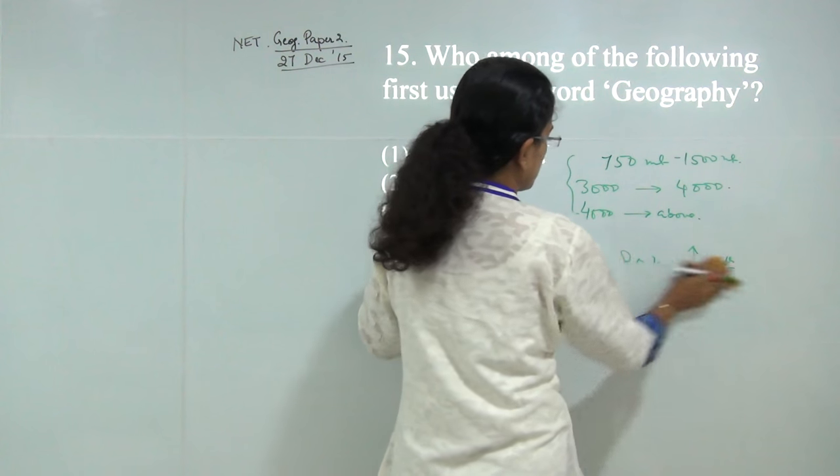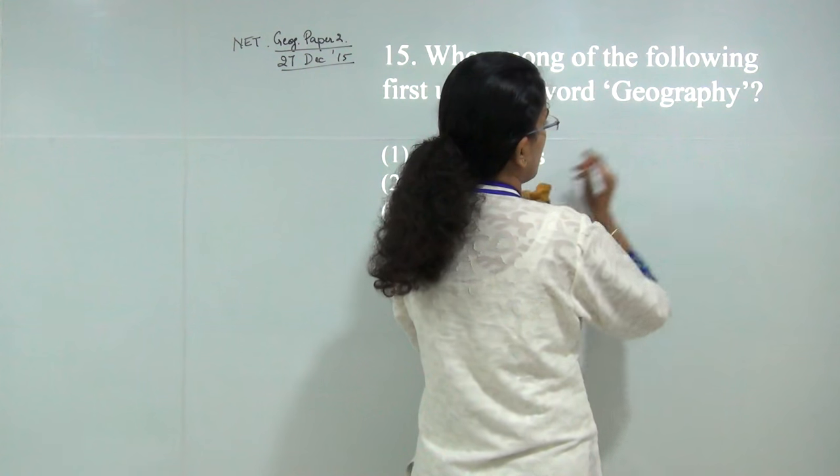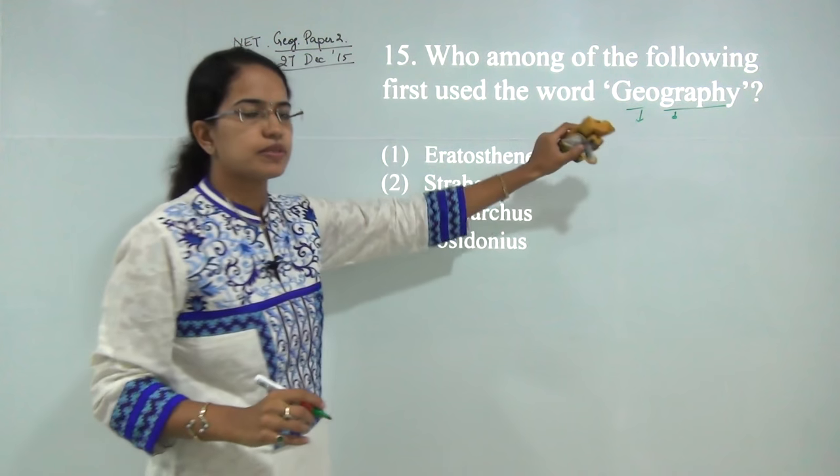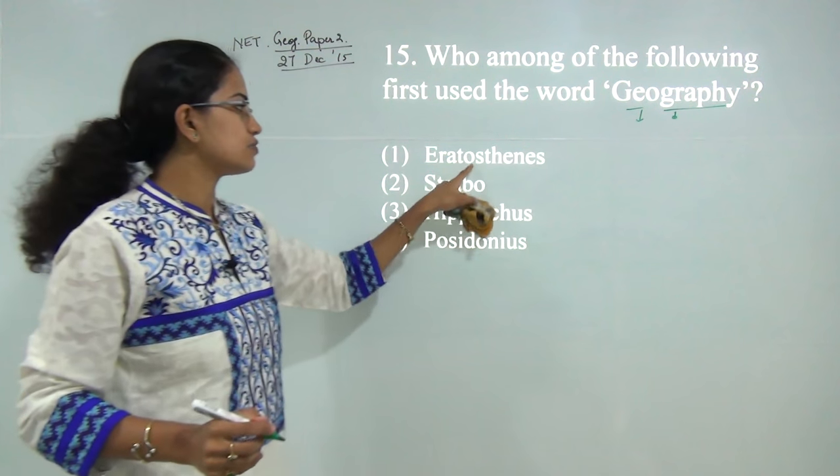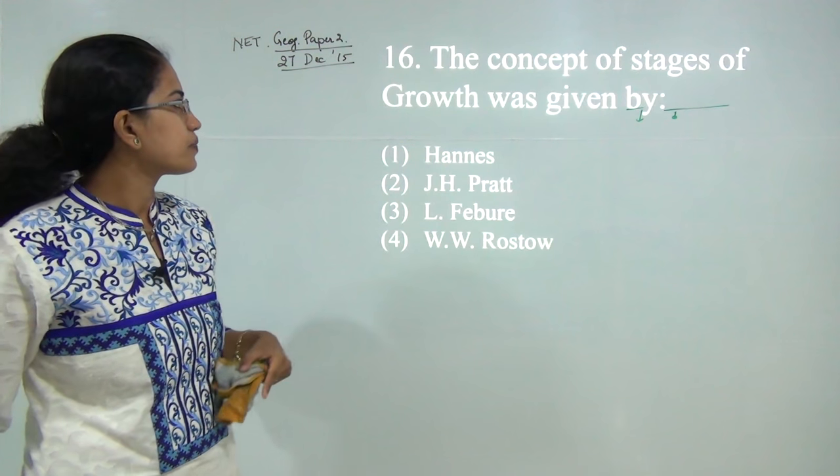Next question: Eratosthenes was the first to use the term geography. The word geography means geo plus graphein—to describe earth. Geos means earth, graphein means to describe. Describing earth was first used by Eratosthenes. The answer is 1.